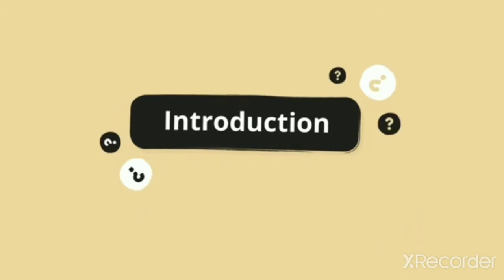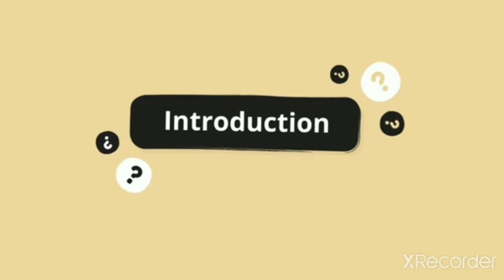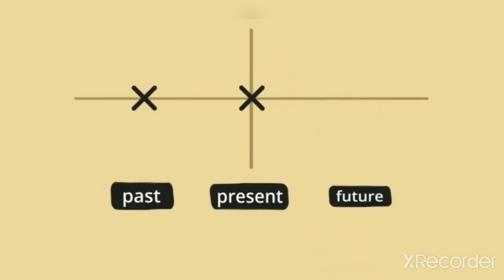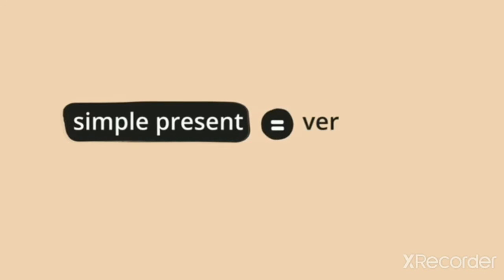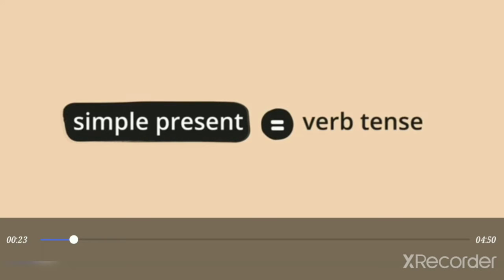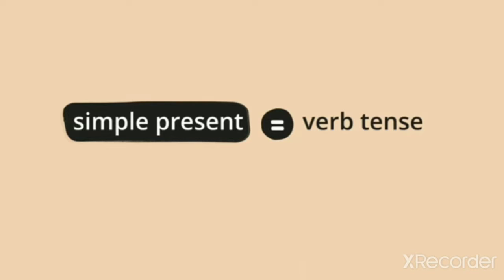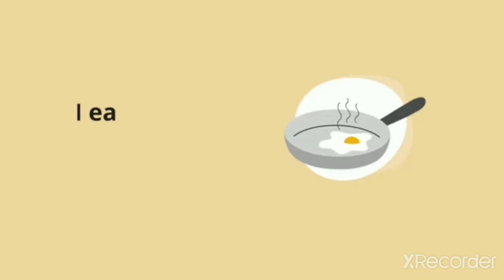The simple present tense are the verb tenses. Verb tenses show the time and action of the place. Even the tenses tell us about the time of action. The simple present tense tells us about the things that are always true.